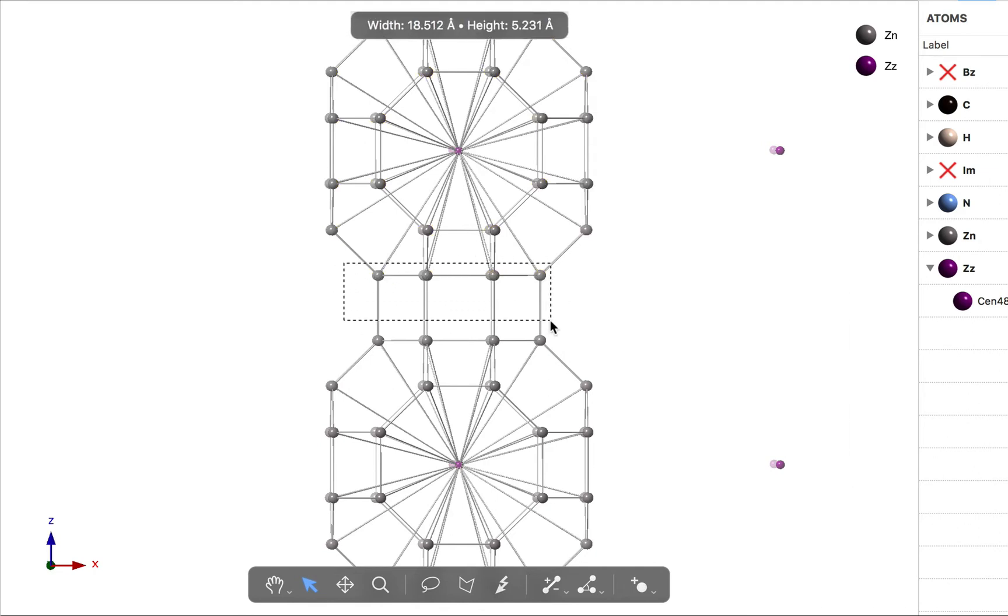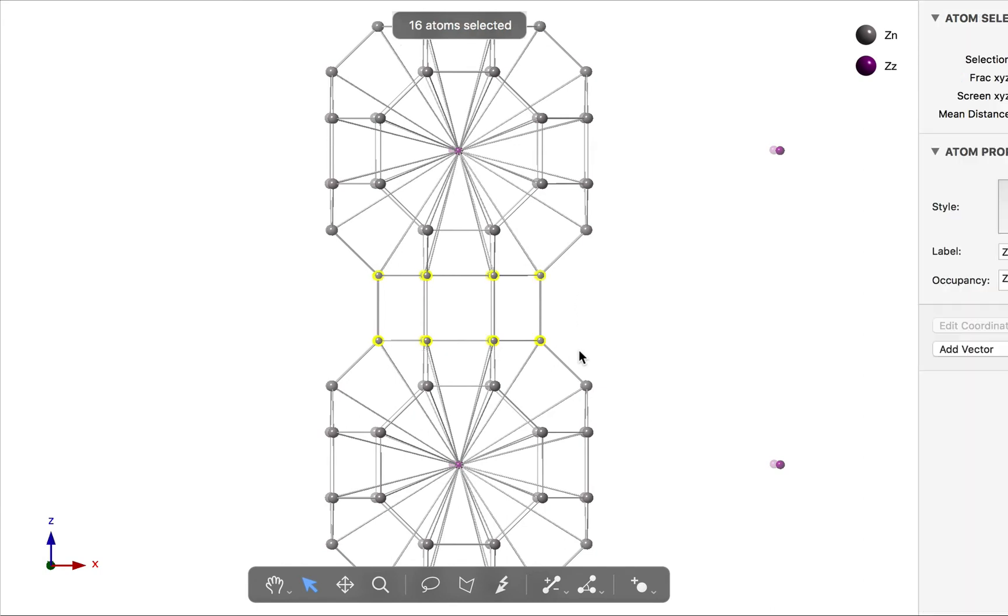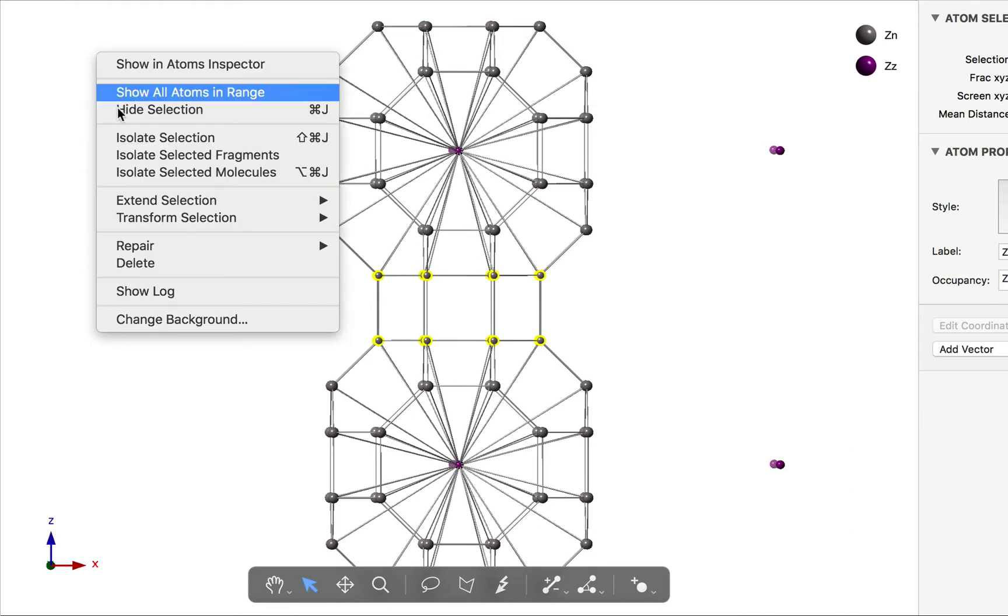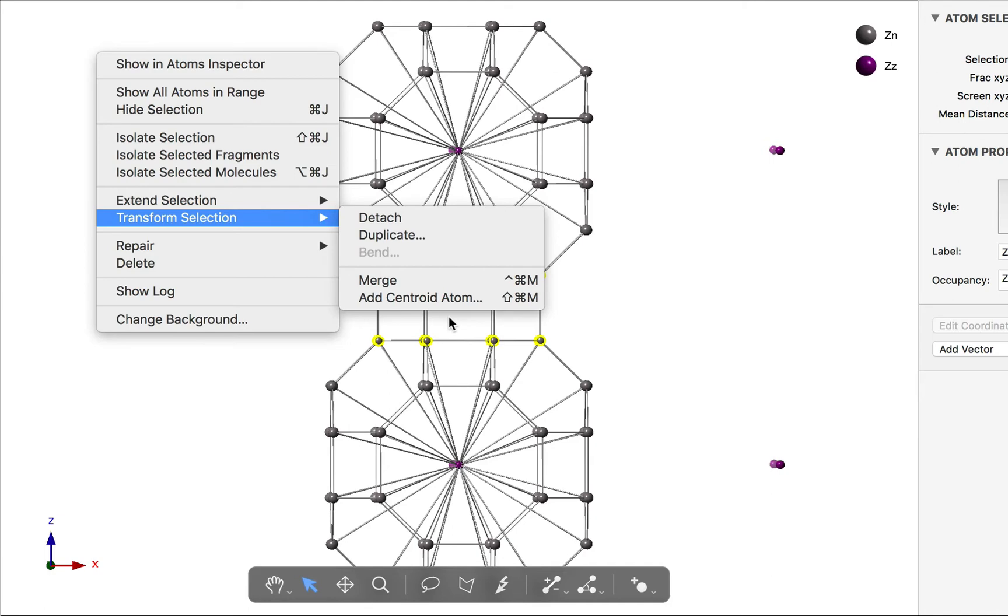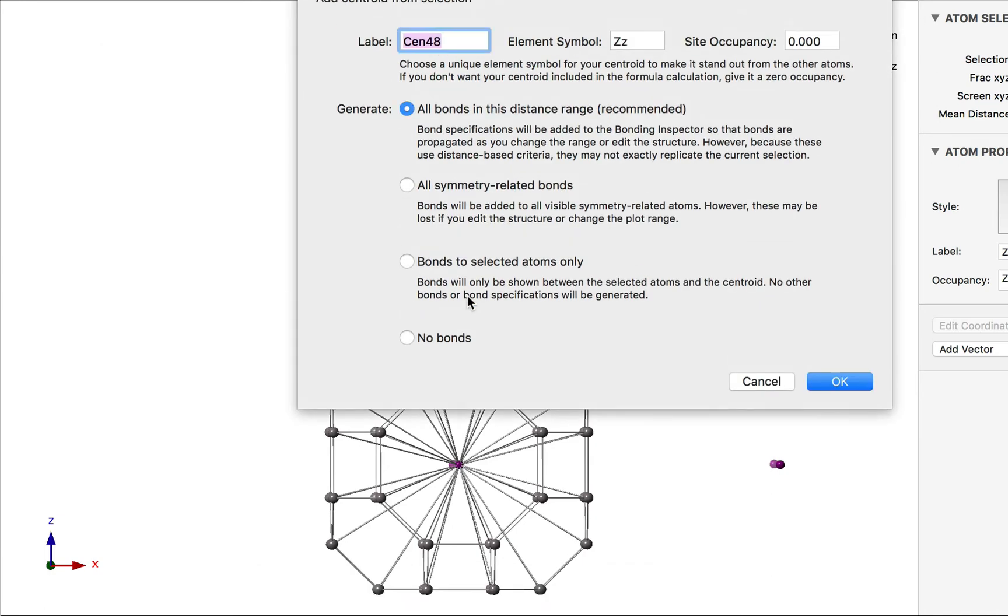Again, I'll use the arrow tool to draw a rectangle around that. We have 16 atoms selected. Let's insert a centroid atom. Same procedure as before. Right-click, Transform Selection, Add Centroid Atom.